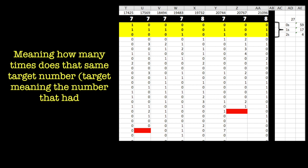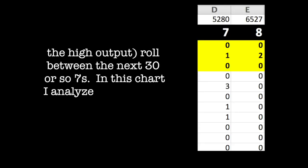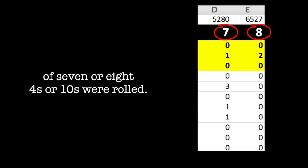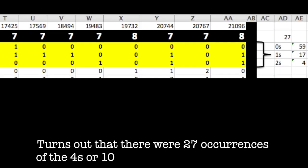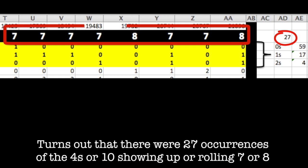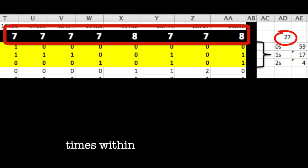In this chart, I analyzed the results after a total of seven or eight fours or tens were rolled. Turns out that there were 27 occurrences of the fours or tens showing up or rolling seven or eight times within a series of rolls.